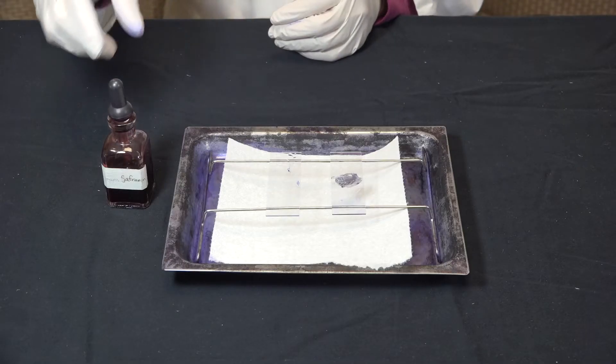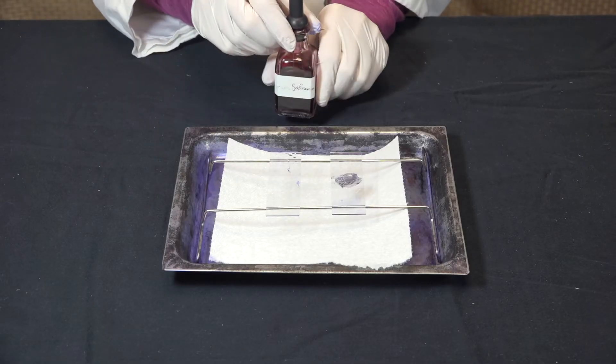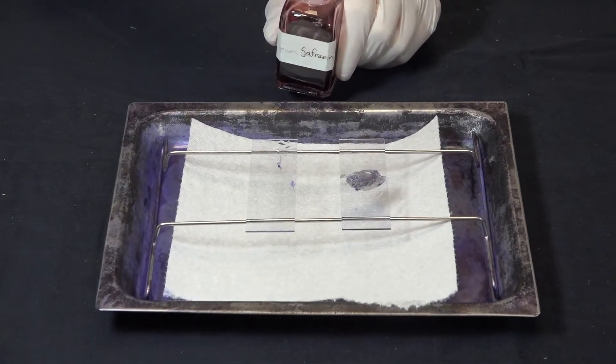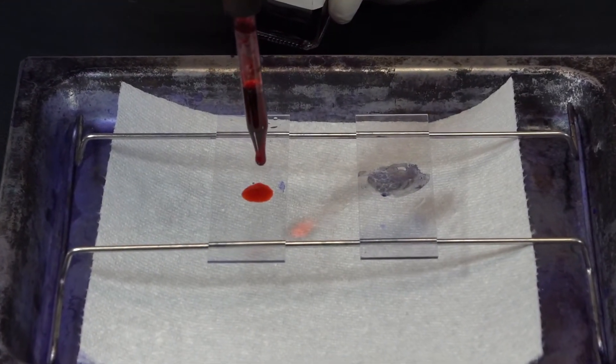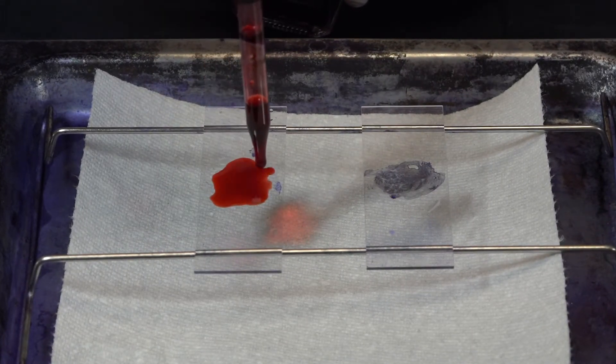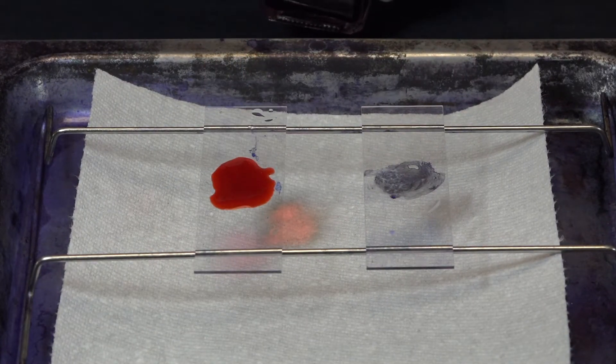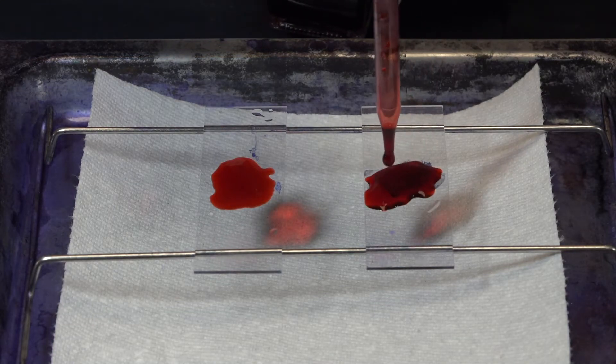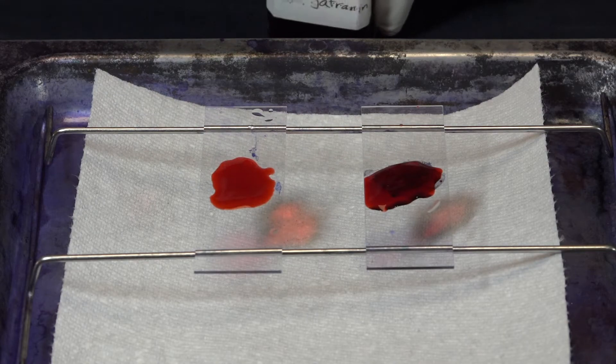Now I'm going to apply our counter stain, safranin. Just like with the primary stain, I'll add enough drops to completely cover the smear. Now I'll wait 60 seconds.